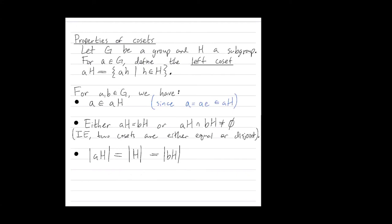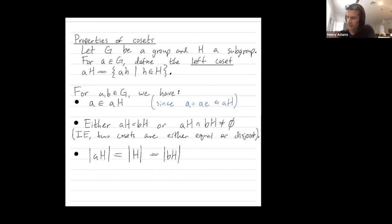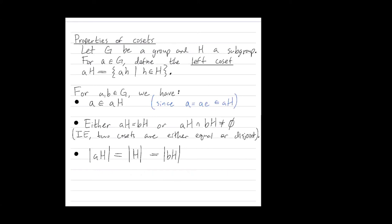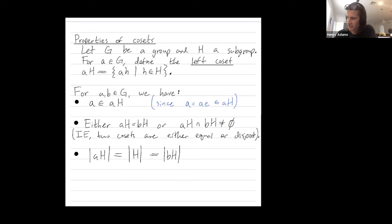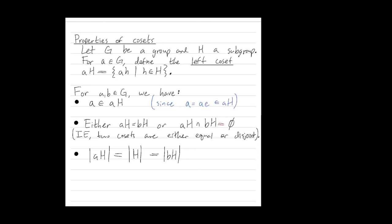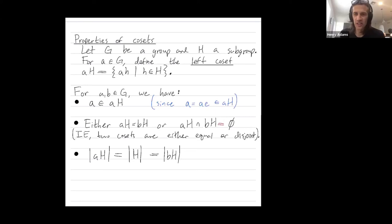I think there might be a mistake in my notes. The intersection between two disjoint cosets should not be zero — it should be the empty set. Let me put that correction in red. Either two cosets are equal, or they're disjoint and have no elements in common.